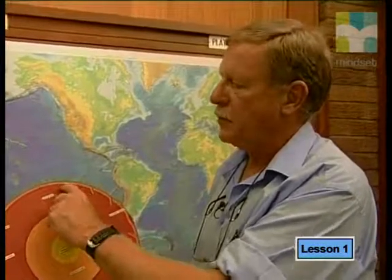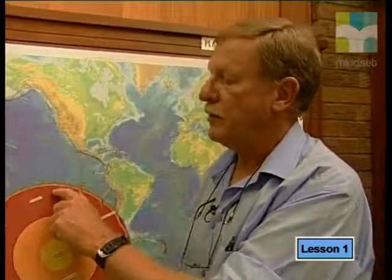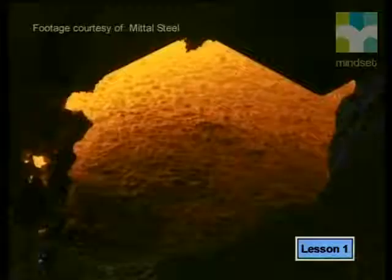Beneath the lithosphere is a slippery zone called the asthenosphere — the uppermost part of a more reddish zone — and this is a very important zone. It's about a hundred kilometers thick. In this zone, the rocks are just starting to melt, so they're very squishy and plastic.